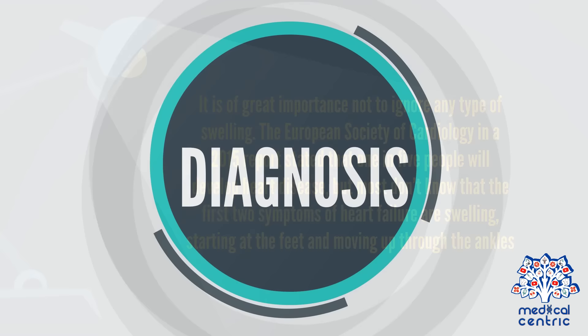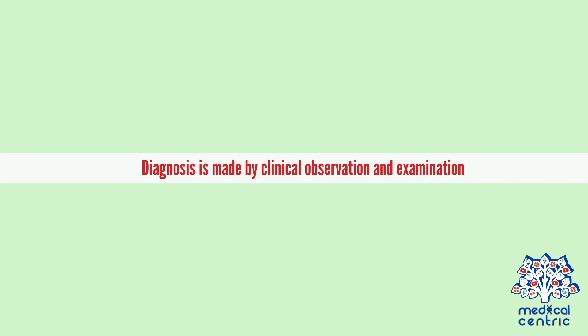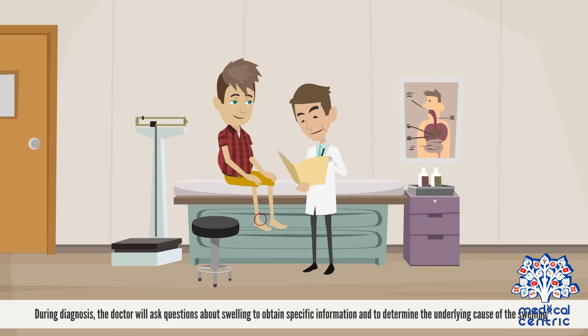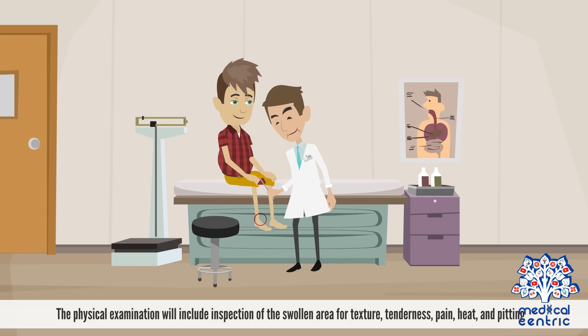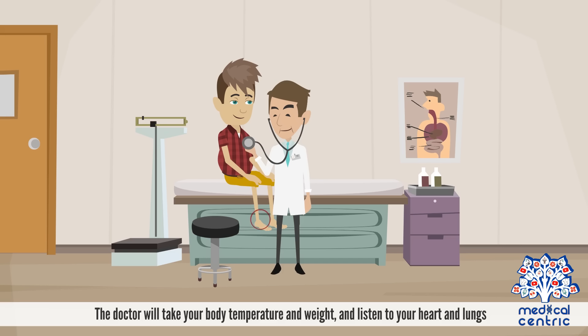Diagnosis and treatment. Diagnosis is made by clinical observation and examination. During diagnosis, the doctor will ask questions about swelling to obtain specific information and to determine the underlying cause. The physical examination will include inspection of the swollen area for texture, tenderness, pain, heat, and pitting. The doctor will take your body temperature and weight and listen to your heart and lungs.